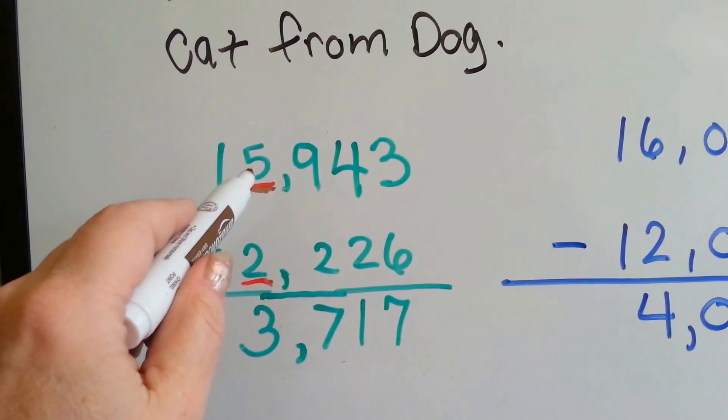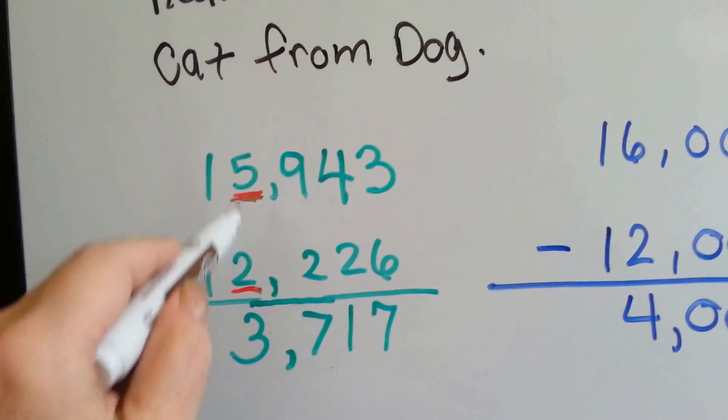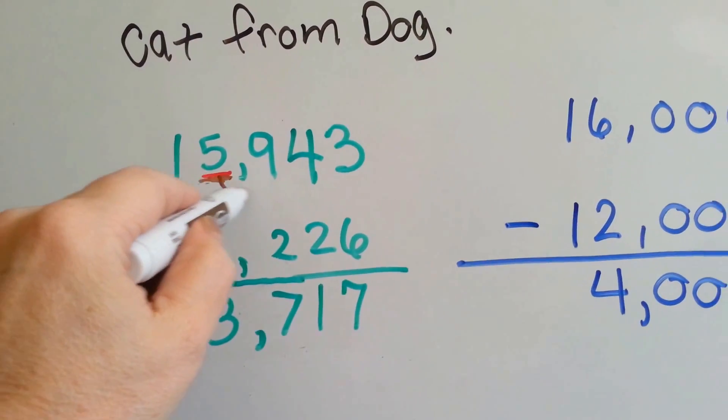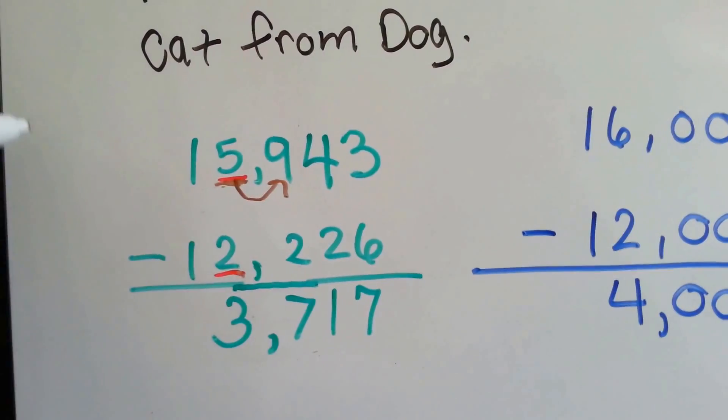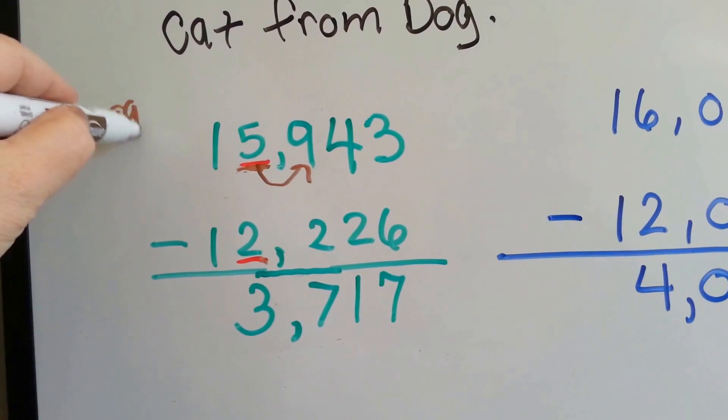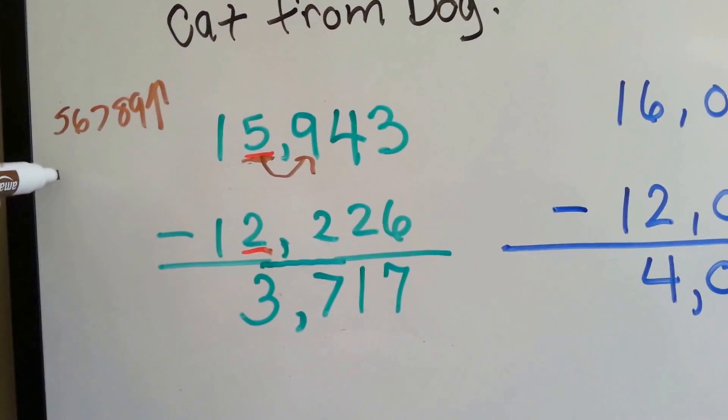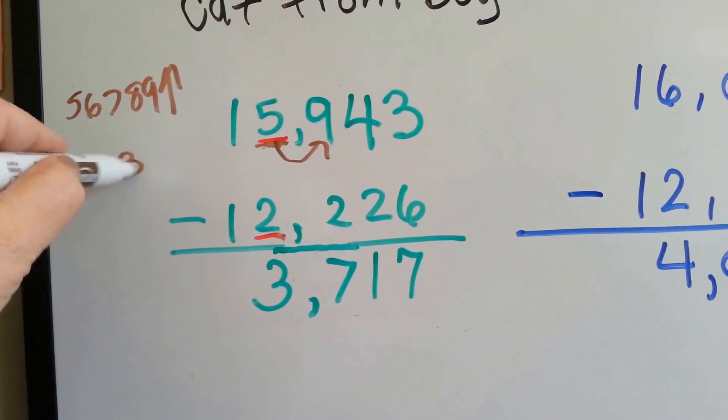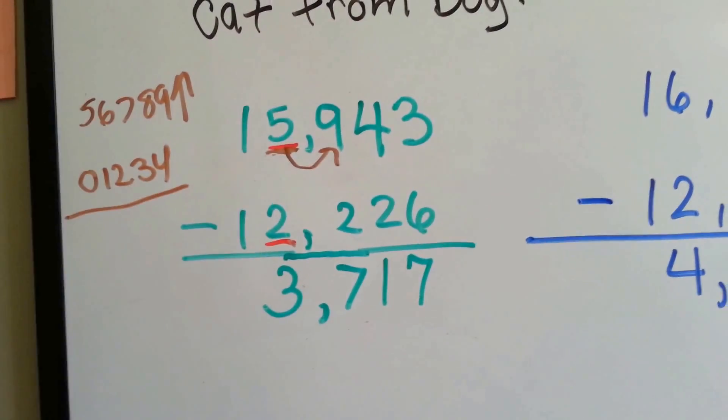So, we're going to round off this 5 and this 2, and the number to the right of it tells it what to do. If it's a 5, 6, 7, 8, or 9, it says to go up. If it's a 0, 1, 2, 3, or 4, it says to stay the same.